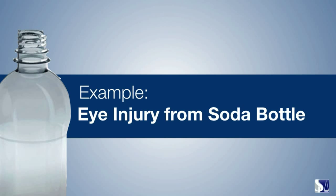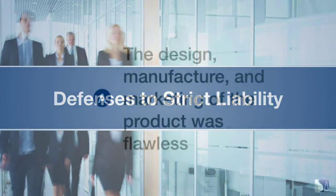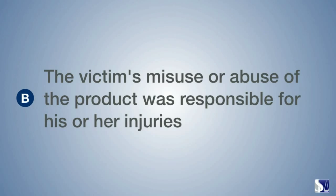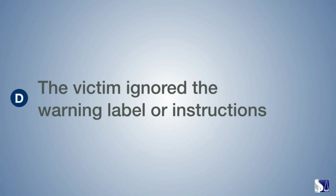There are some common defenses to strict product liability, as strict liability is not automatic. Manufacturers may escape strict liability if they can prove one or more of the following: the design, manufacture, and marketing of the product was flawless; the victim's misuse or abuse of the product was responsible for his or her injuries; the victim was aware of the defect and its danger and used the product anyway; or the victim ignored the warning label or instructions.